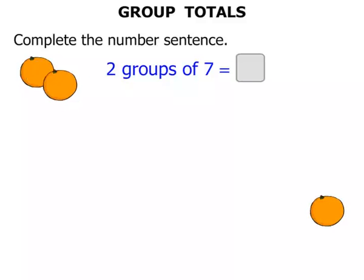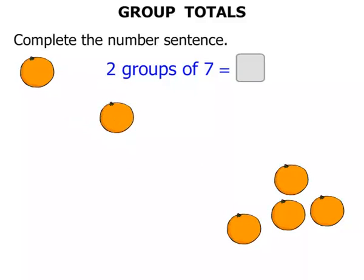One, two, three, four, five, six, seven. Right at the moment that's one group of seven. We need two groups. So let's start another group.